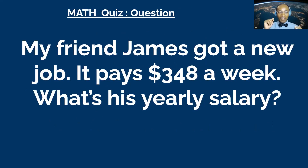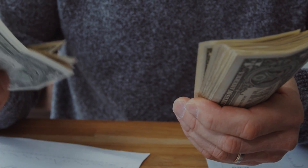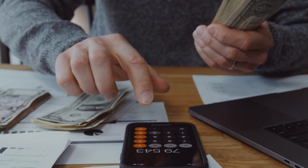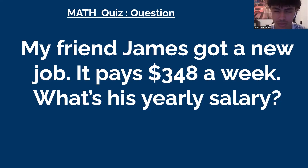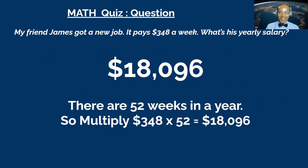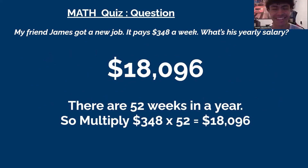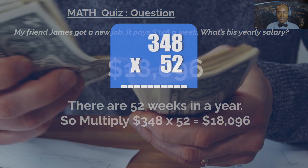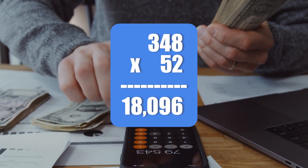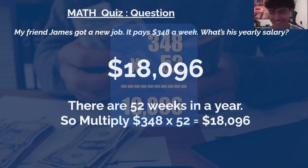Next question goes to Isaiah — a math question. James got a new job that pays $348 a week. What is his yearly salary? You have 60 seconds. Isaiah answered $18,096 per year — final answer. That's correct! Four dollars for Isaiah. He explained: 52 weeks in a year, multiply 348 by 52.